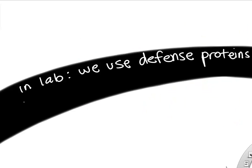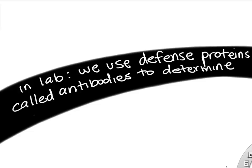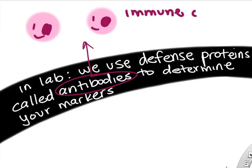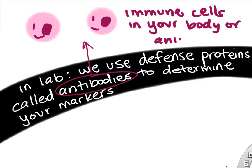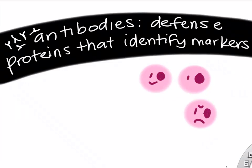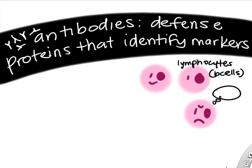In order to do this, we're going to take advantage of something called antibodies. Antibodies are defense proteins that your immune cells can make in order to protect you. Little immune cells specifically called lymphocytes — when they detect something bad in your body, they can make these defense proteins to protect you. These lymphocytes, specifically called B cells, their job is to sit around and wait, and if you're ever infected with a pathogen or a bad guy, they can respond by making antibodies.